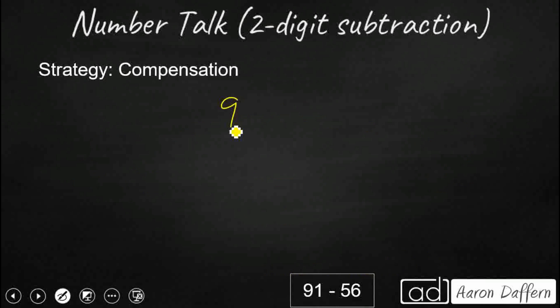So we can also use a strategy called compensation. So what we do is we're going to change our subtrahend here. We want to make it easier to subtract. So I'm going to add 4. The reason I'm going to add 4 is because if I get up to 60, look how easy this subtraction problem is. 91 minus 60. No regrouping required. So that's going to be 31. But remember, I added an extra 4. And I really subtracted 60 when I really only should have subtracted 56. So I added 4 and subtracted 4 more than I needed to. So I actually have to give those 4 back. So since I took 4 extra away, I've got to give 4 extra back. And that gets me back up to my 35.